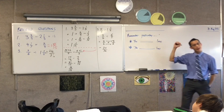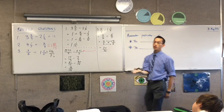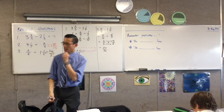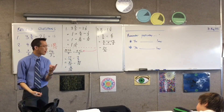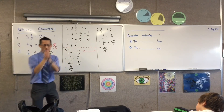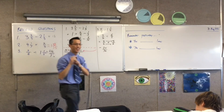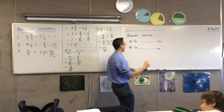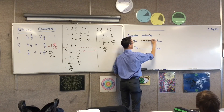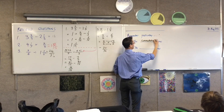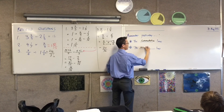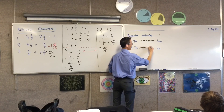I just want you to recall yesterday — I introduced to you, or I put names on, two laws of arithmetic. Can someone give me one of them, Charlie? Commutative and associative. You can give me both, that's alright. The commutative law and the associative law — bit of a mouthful.